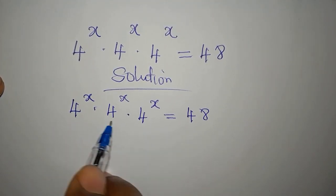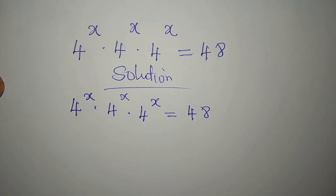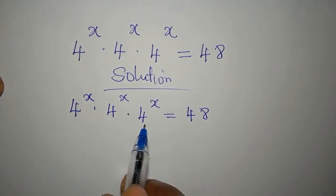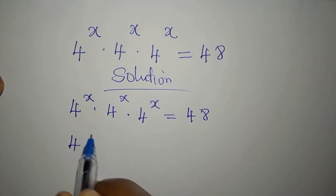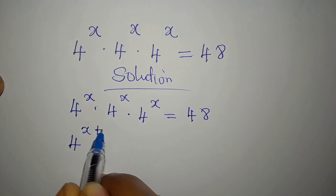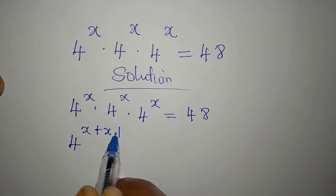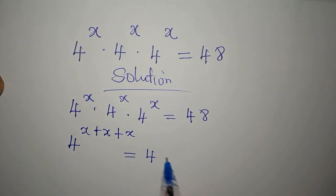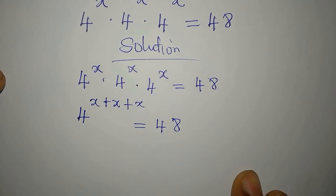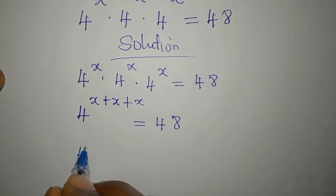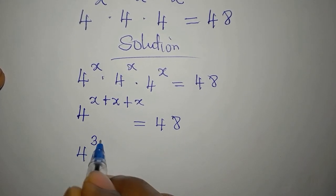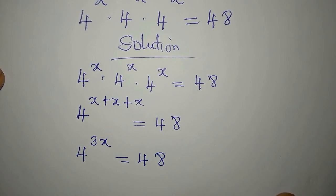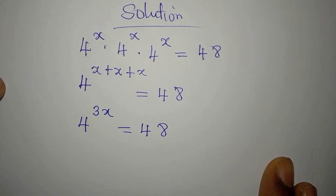We are multiplying here, and when you multiply and the bases are the same, you pick one of them and add the powers. You can only do this when you are multiplying. So from here we have 4 to the power of 3x equal to 48.